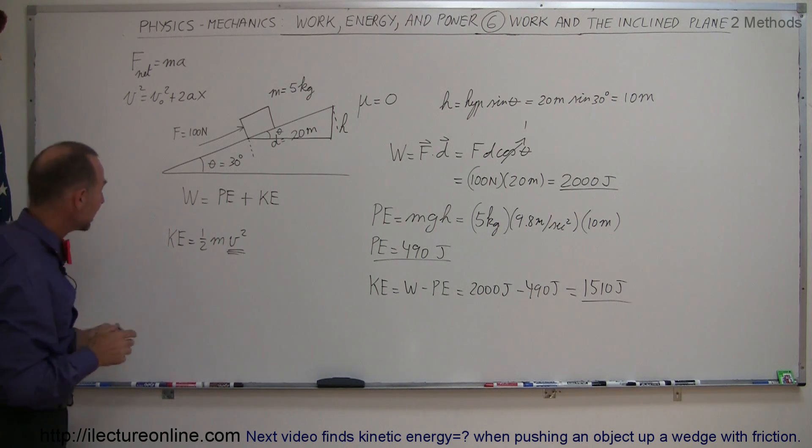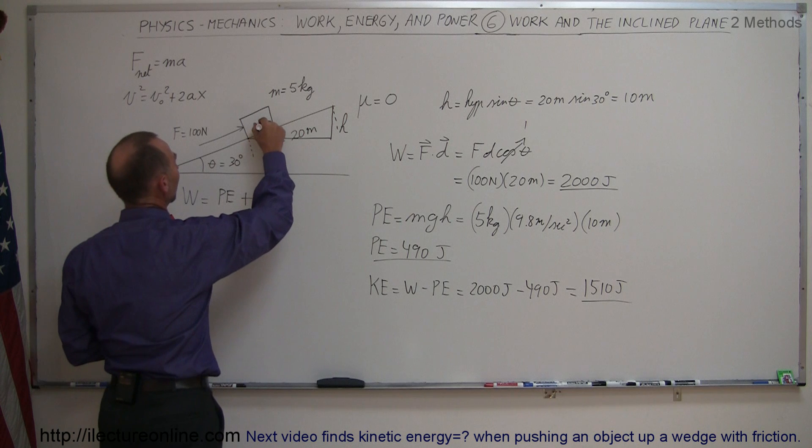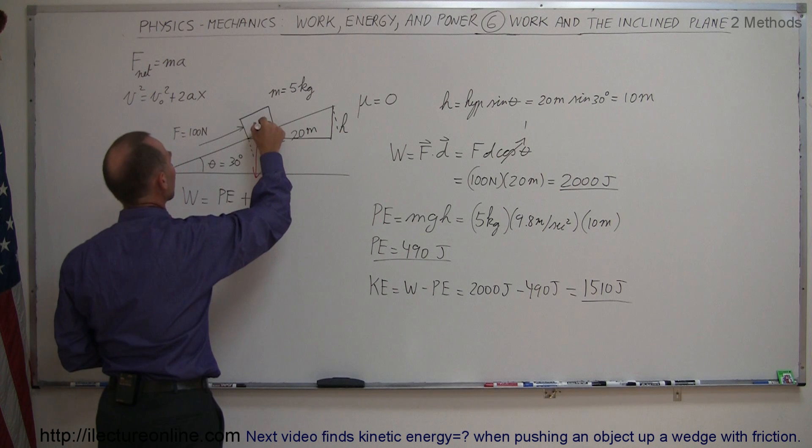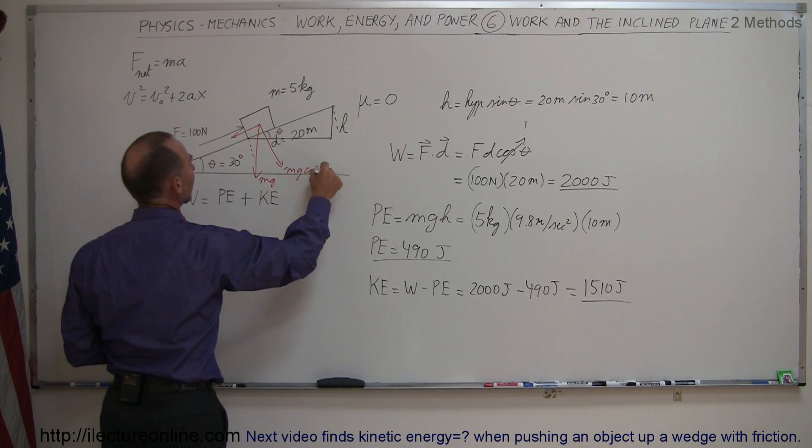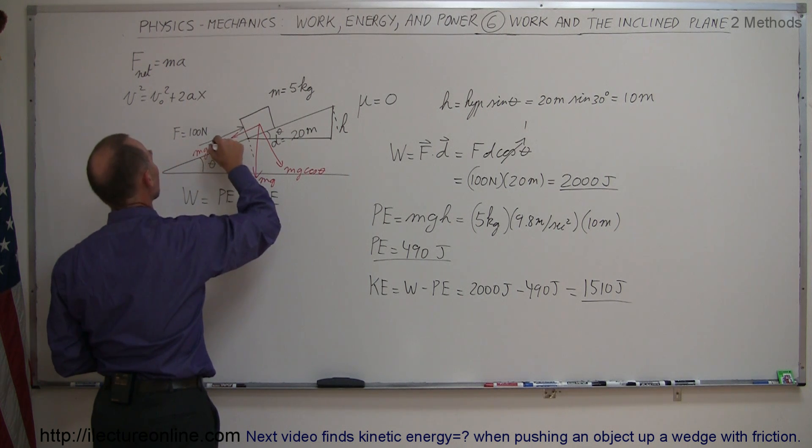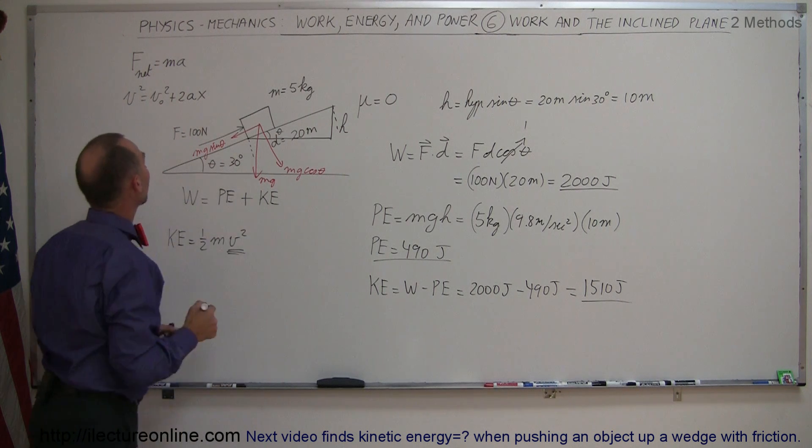So to find the net force, we have to look at all the forces acting on the block. So we have mg pulling down, which can be divided into the vertical and horizontal components. So this would be mg cosine theta, and this would be mg sine theta. So the net force will be 100 newtons minus mg sine theta.